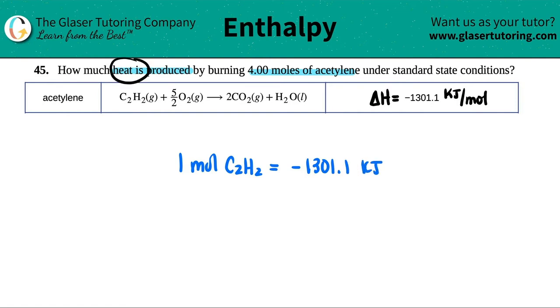Now the question is asking for how much heat, that's the kilojoules, is produced by burning four moles of acetylene. So if we had one mole of C2H2, and now I want four moles of C2H2, how did I go from one to four? I just times by four. So whatever you do to this side, you just got to do to this side. So I just have to take that kilojoule value and times it by four.